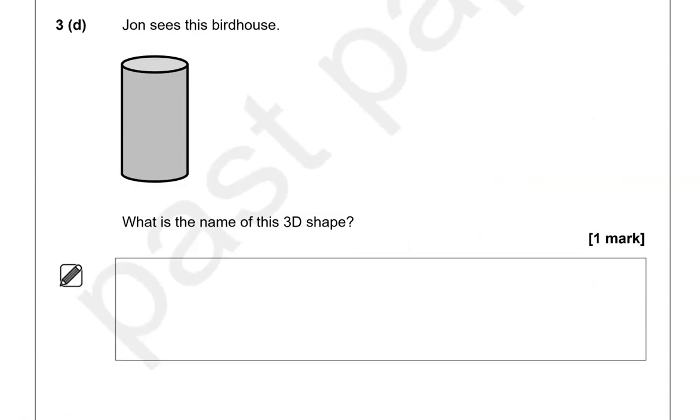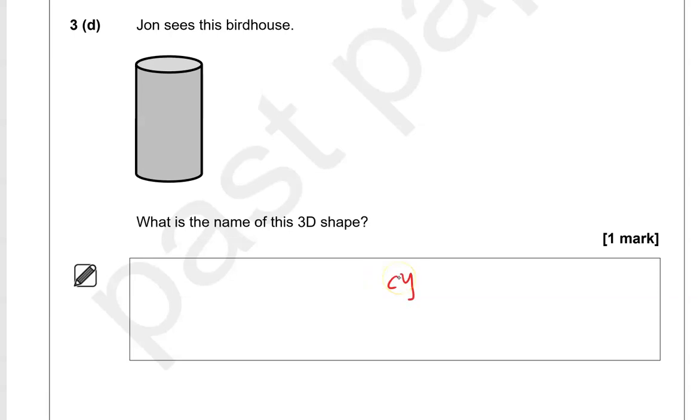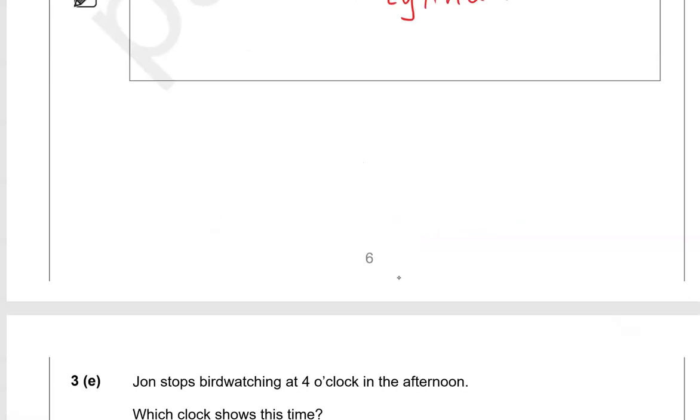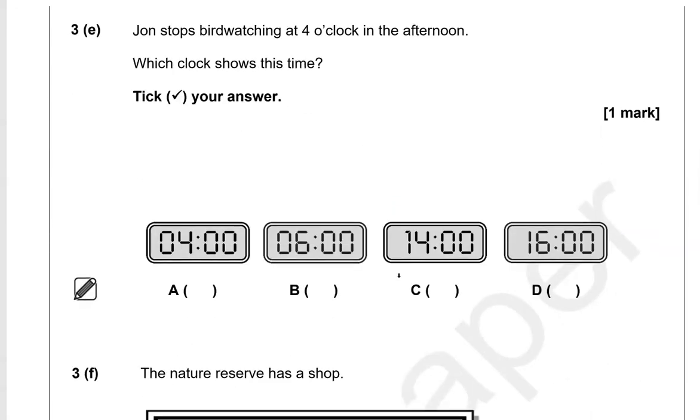John sees this birdhouse. What is the name of this 3D shape? The name of this 3D shape is cylinder. John stops birdwatching at 4 o'clock in the afternoon. Which clock shows this time? Tick your answer. So 4 o'clock in the afternoon. That is going to be after 12pm. So after midday. So 1 hour after midday, that will be 1pm or 13. Then 2pm will be 14. 3pm will be 15. And 4pm will be 16. So D is the correct option.